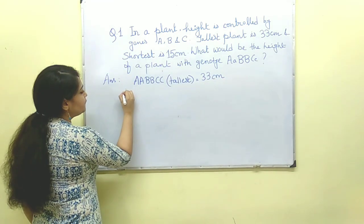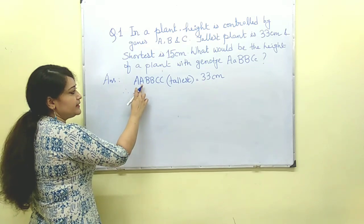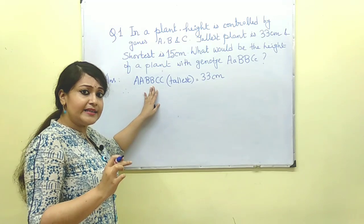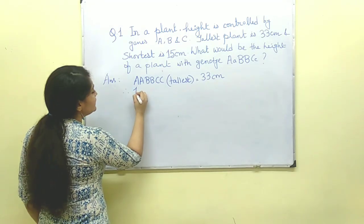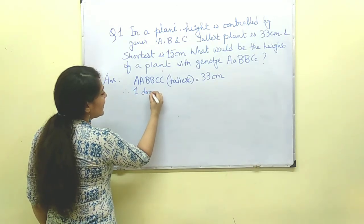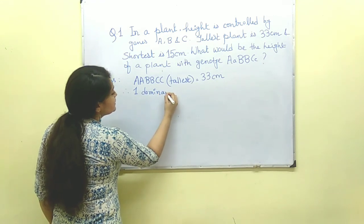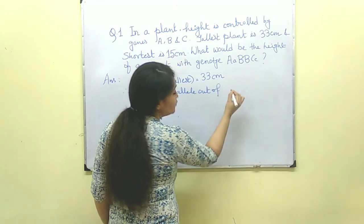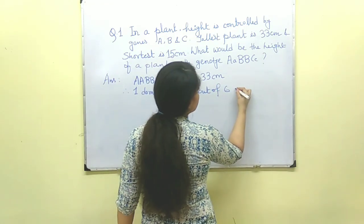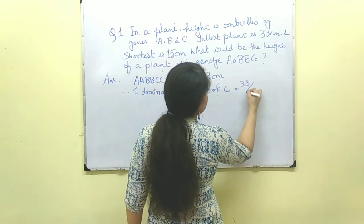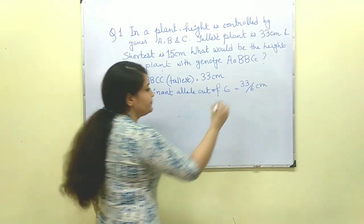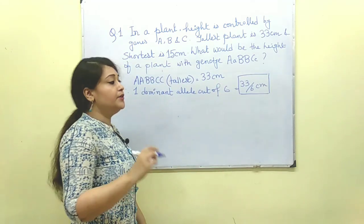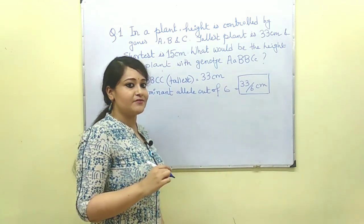So AABBCC contains six alleles. Therefore one dominant allele out of the six is going to be 33/6 centimeters. This is one very important piece of data which we will require to solve this question.